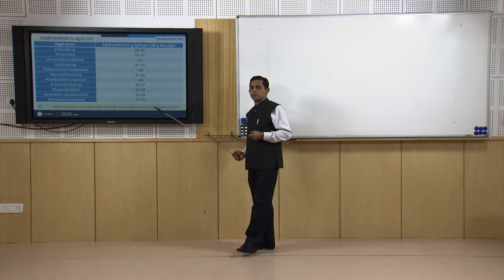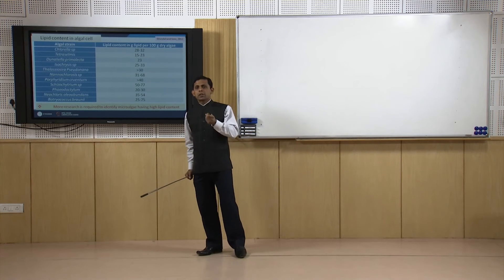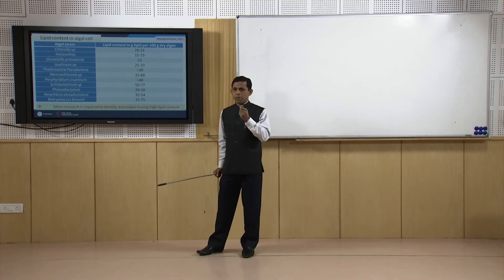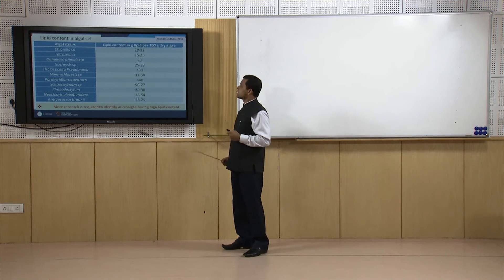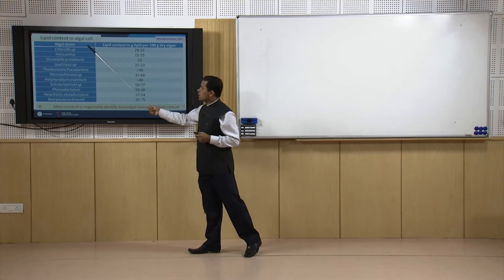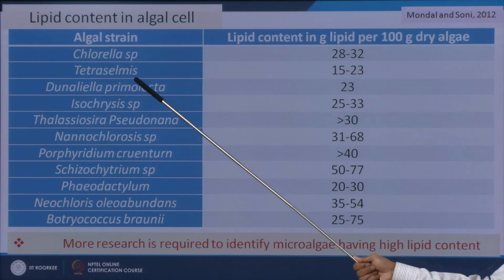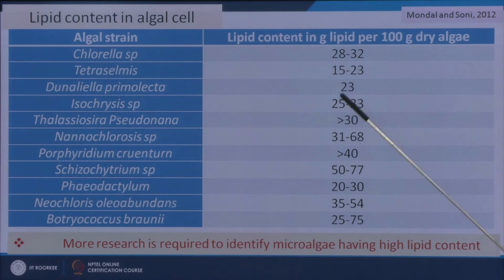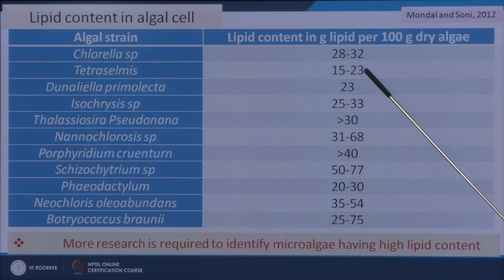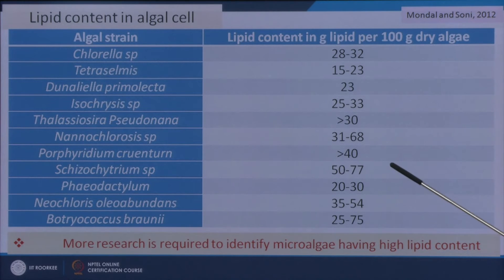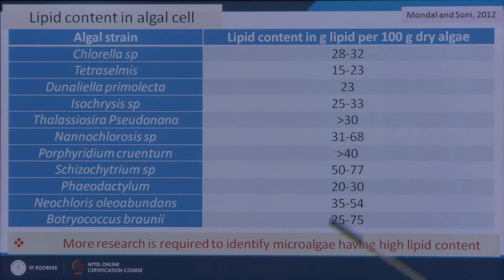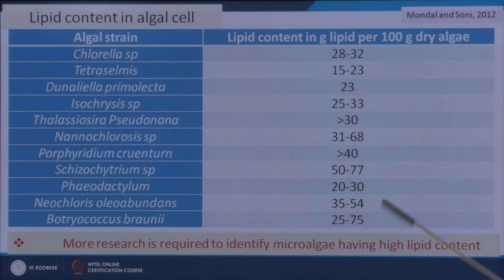This slide shows the lipid content per unit mass of algal biomass for different algal strains — Chlorella, Tetraselmis, and others. Values range from 15–23%, 22–32%, 28–32%, and up to 50–77% and 25–75% for the top two species, which give the maximum lipid content per unit body weight of algal biomass.